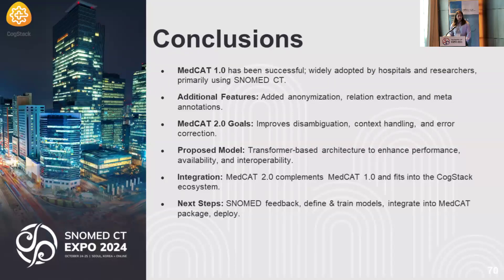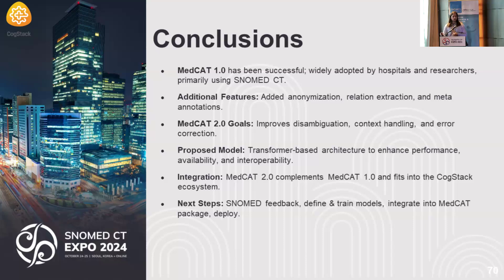These are our conclusions. MedCAT 1.0 has been successful — widely adopted by hospitals and researchers, primarily using SNOMED. We've added additional features over the years: anonymization, relation extraction, and meta annotations. The goals of MedCAT 2 are, simply, to increase performance, precision, and recall — and to do that we're going to improve disambiguation, handling of context, and error correction. Our proposed model uses a transformer-based architecture, which is much more standardized with the NLP industry. We want to integrate MedCAT 2.0 into what MedCAT 1.0 offers in its library and ensure it fits nicely into the CogStack ecosystem. For next steps, we want feedback, figure out what the model will look like, define and train those models, and integrate into the MedCAT package and deploy.